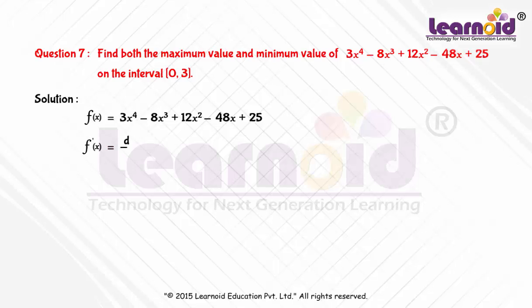First find f'(x) by differentiating with respect to x. f'(x) equals 12x^3 minus 24x^2 plus 24x minus 48.